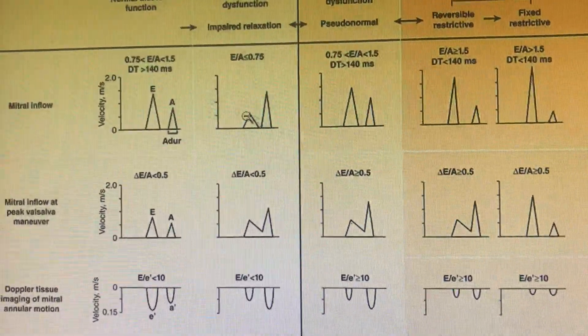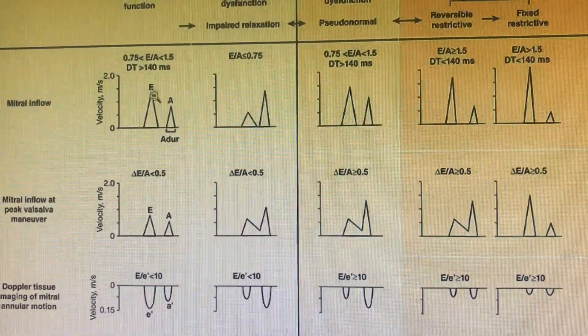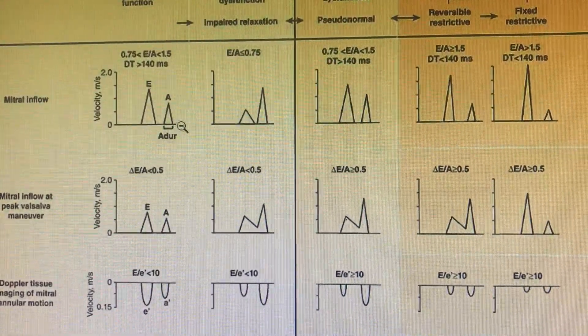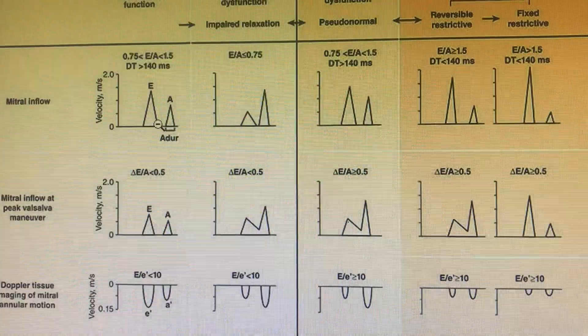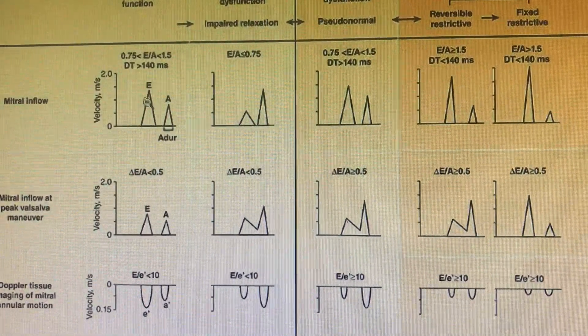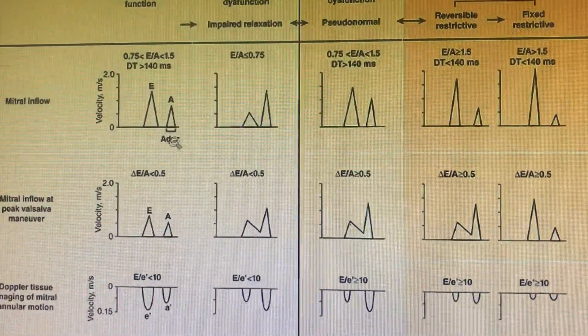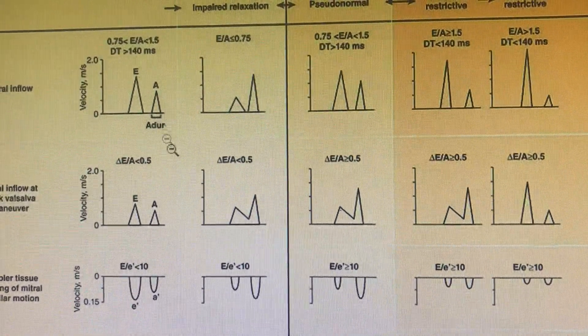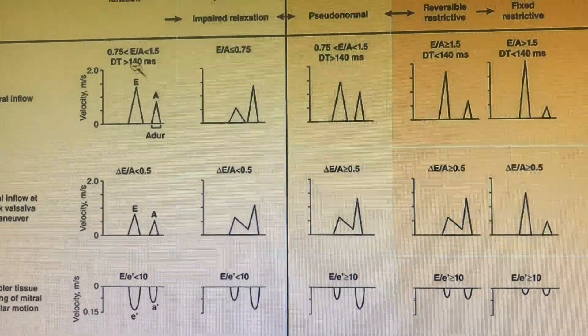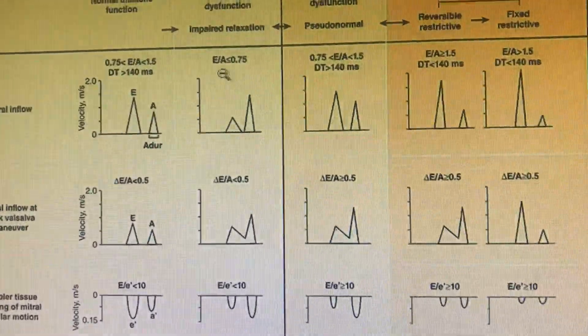Let's discuss the normal mitral inflow. Usually the E velocity and the A velocity - the E will be more than A, so the ratio will be more than 0.75 but less than 1.5. That means E is not more than two times the A but it is not less than the A. The A duration is very important because we calculate the A duration with the AR duration of the pulmonary venous flow. The deceleration time is more than 140 milliseconds. This is calculated by placing the pulse Doppler on the mitral inflow.